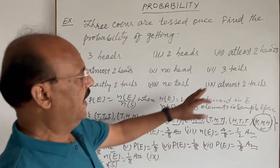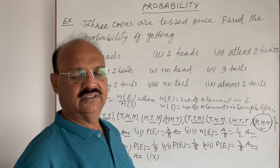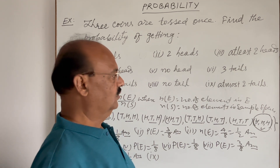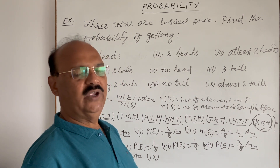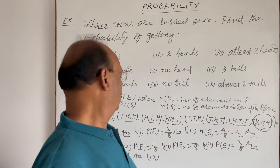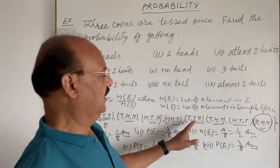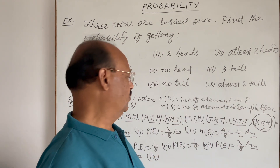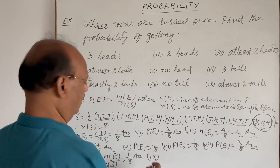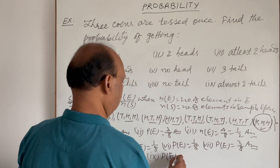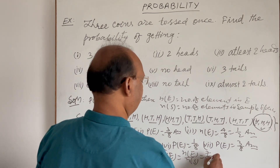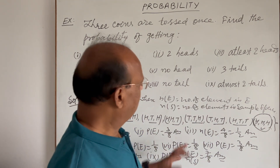Ninth part: at most two tails means a maximum of two tails, so zero tails, one tail, or two tails are all valid. Zero tails: one element (H H H); one tail: three elements; two tails: three elements. So n(E) is 1 + 3 + 3 = 7, and n(S) is 8. The probability is 7/8.